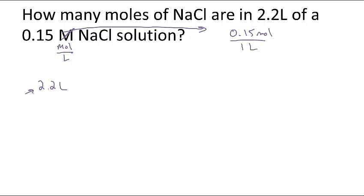Now just to do the math, I have my conversion factor. I know I have liters in my unit, 2.2 liters. The one I want to cross out goes on the bottom, so liters goes on the bottom and my 0.15 moles goes on top. In 2.2 liters of 0.15 molar NaCl solution, I have 2.2 times 0.15 moles, which comes out to be 0.33 moles.